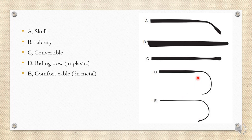The comfort cable temple is similar to the riding bow but uses the same flexible metal material from the start of the temple all the way to the end. The difference is that in the riding bow the initial part is plastic and the end is flexible metal, whereas in the comfort cable the complete temple is metal cable.